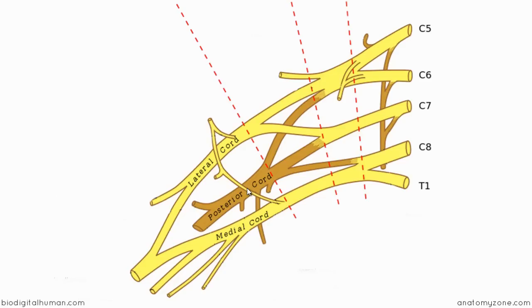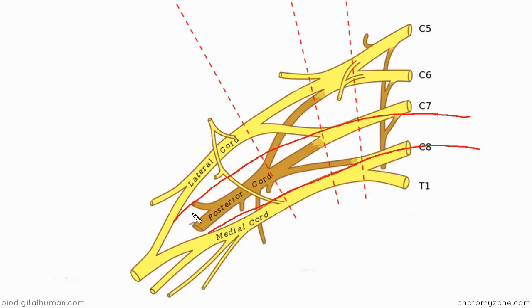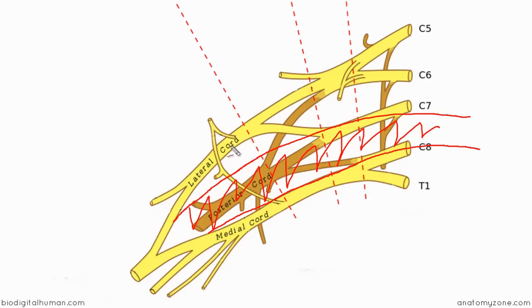Drawing in the axillary artery, it continues up to form the subclavian artery. The posterior cord is shown in brown because it lies behind the lateral and medial cords. You can see that the medial cord lies medial to the axillary artery, the lateral cord lies lateral to the axillary artery, and the posterior cord — formed from the posterior divisions of the three trunks — runs behind the axillary artery.